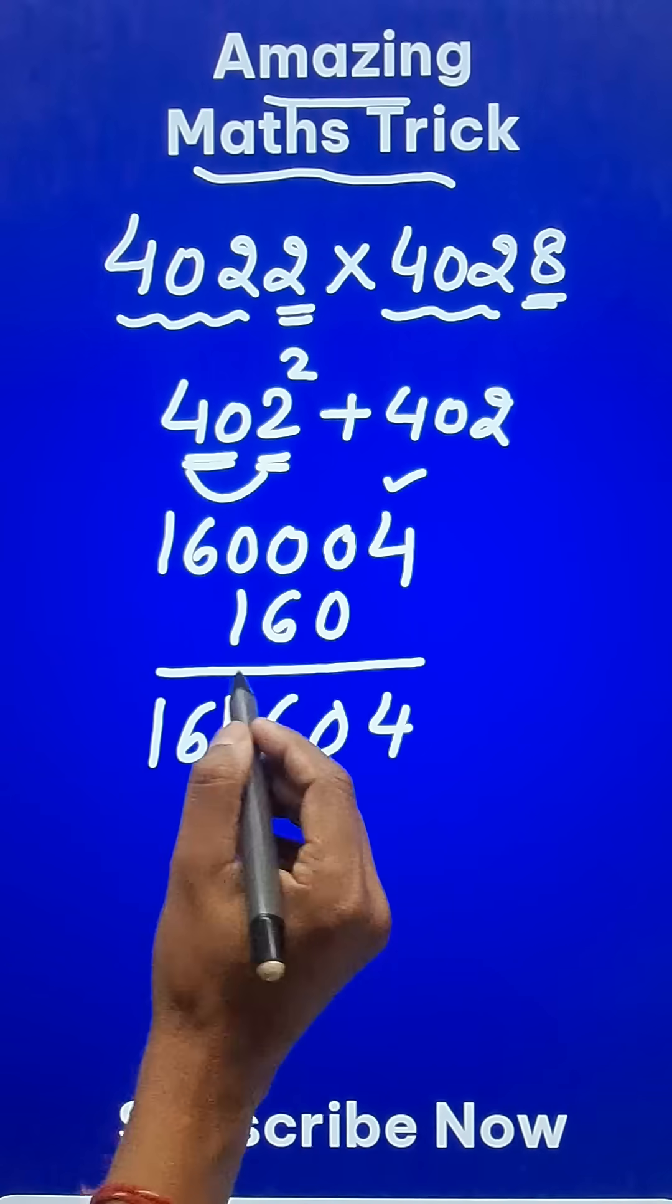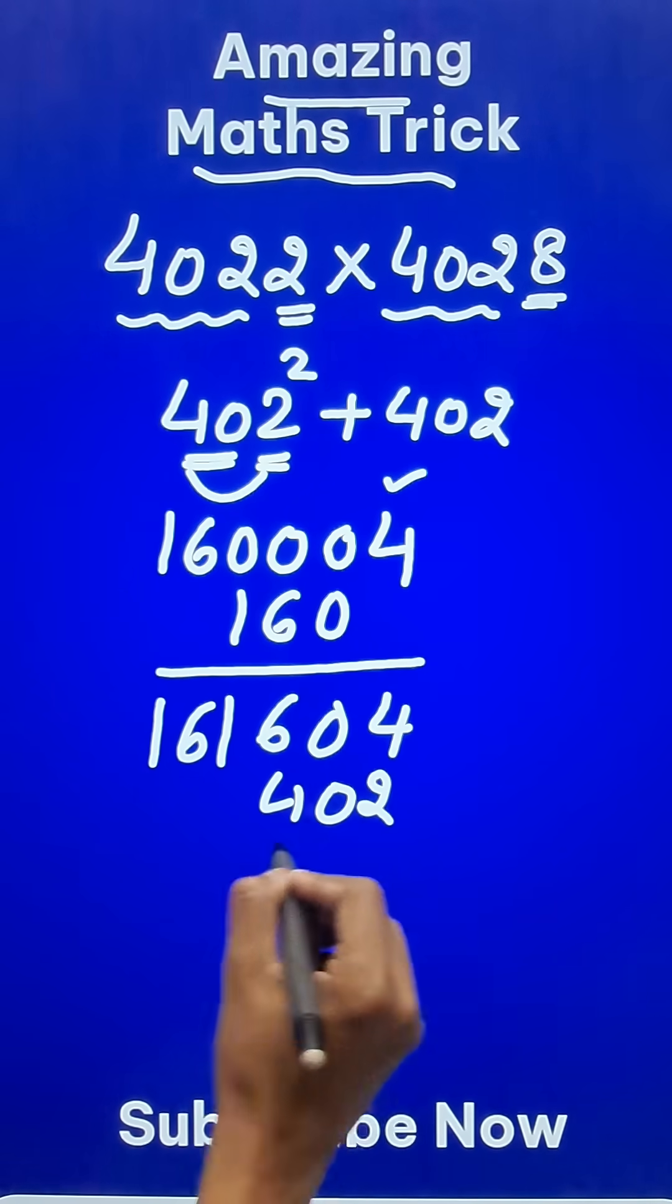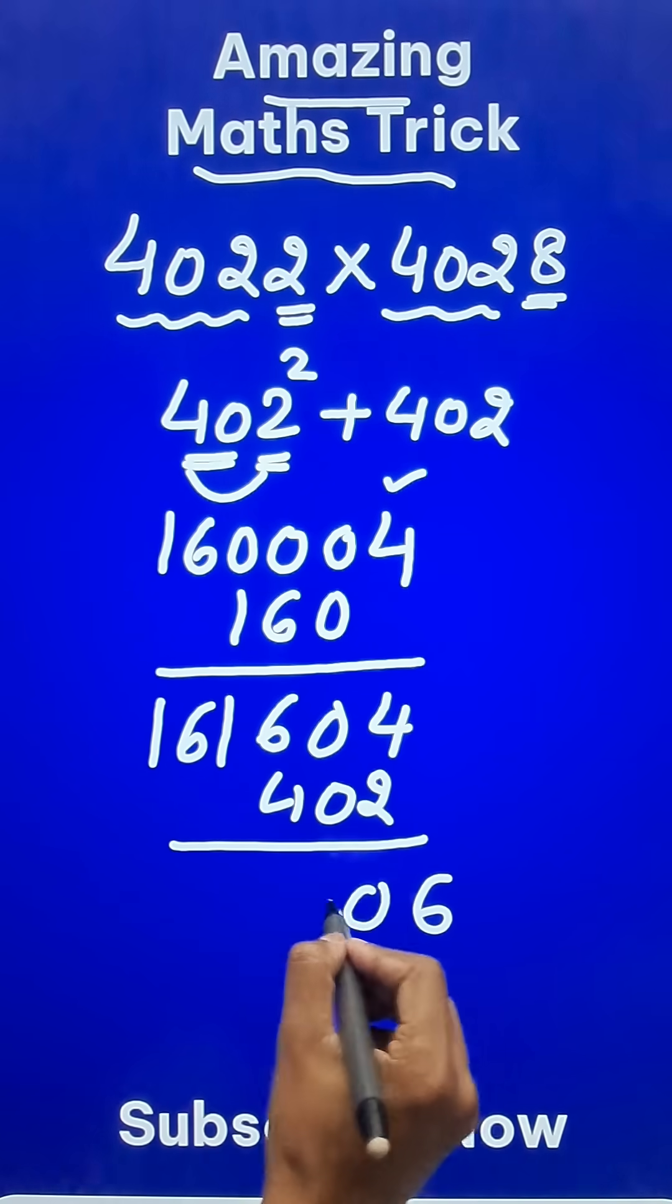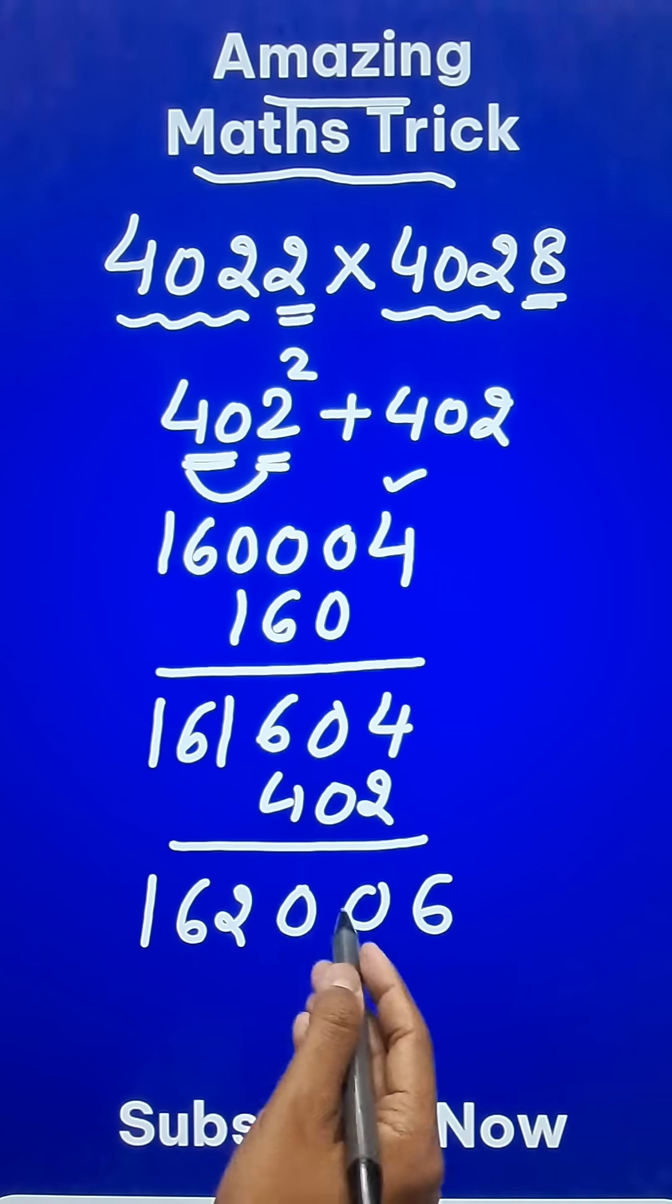This is the first part of your answer. Now I have to add 402 to this result. So let's add 402. You get 60, this is 0 again. So 1 carry means 2 and 6 and 1, giving us 162006.